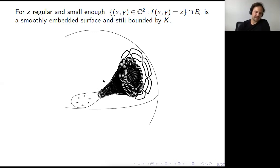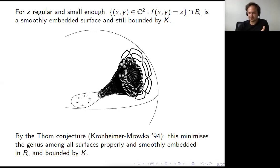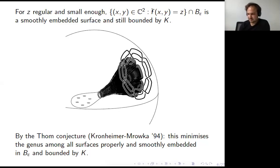It is a classic theme in singularity theory to desingularize singularities — to perturb the curve to make it smooth. What one can do is take a very small regular value Z for the polynomial and look at the level set; it's a smoothly embedded surface that still bounds the same knot up to isotopy. You can ask: is this surface still optimal with respect to genus among all smoothly embedded surfaces bounded by the knot K in the three-sphere?